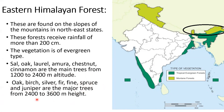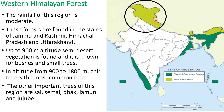In Western Himalayan forests, the rainfall is moderate. Forests found here are in the states of Jammu and Kashmir, Himachal Pradesh, and Uttarakhand. Up to 900 meters altitude, semi-desert vegetation with bushes and small trees is found due to low rainfall. From 900 to 1800 meters, the chil tree is the most common, along with other important trees such as sal, semal, dhak, jamun, and jujube.